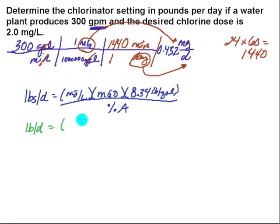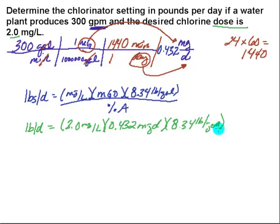Milligrams per liter is my dose, and they told me up here that my dose is 2 milligrams per liter, so let's go ahead and put that in, 2 milligrams per liter. The flow rate we calculated before, that was our 300 gallons per minute, but we turned that into 0.432 MGD times 8.34 pounds per gallon.